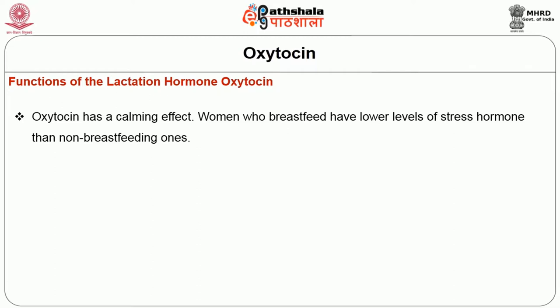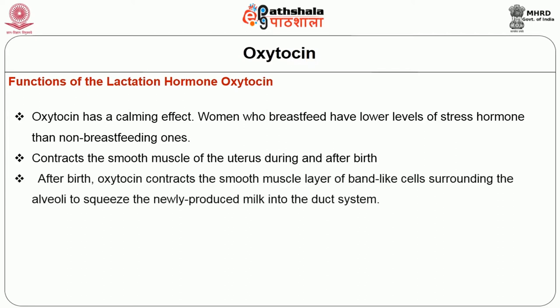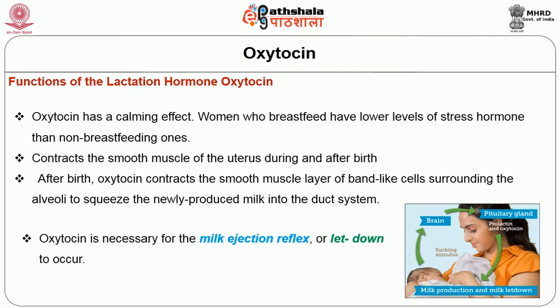Women who breastfeed have lower levels of stress hormones than non-breastfeeding ones. Oxytocin contracts the smooth muscle of the uterus during and after birth. After birth, oxytocin contracts the smooth muscle layer of band-like cells surrounding the alveoli to squeeze newly produced milk into the duct system. Oxytocin is necessary for the milk ejection reflex, or let-down.